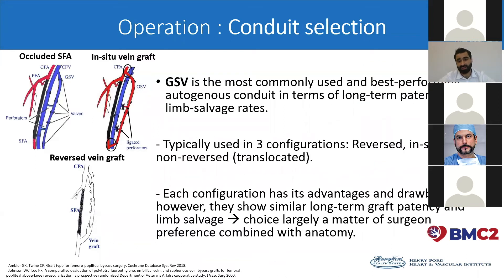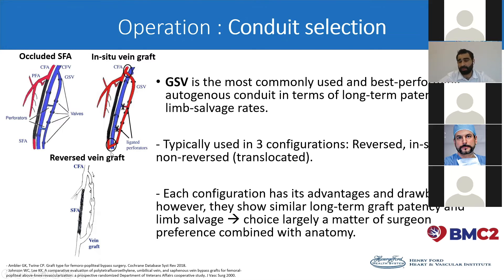For the conduit selection, the great saphenous vein is the most commonly used, best performing in terms of long-term patency and limb salvage rates. It could be used in three configurations, as illustrated in the pictures: reversed, in situ, or non-reversed. Each configuration has its own advantages and drawbacks. However, the long-term patency and limb salvage rates have been shown to be similar, hence the choice is largely a matter of surgeon preference combined with anatomy.